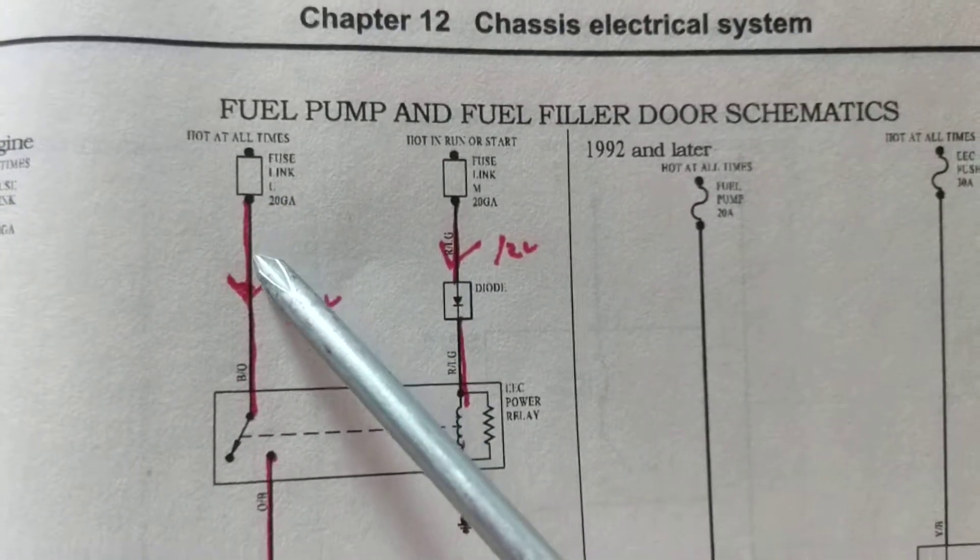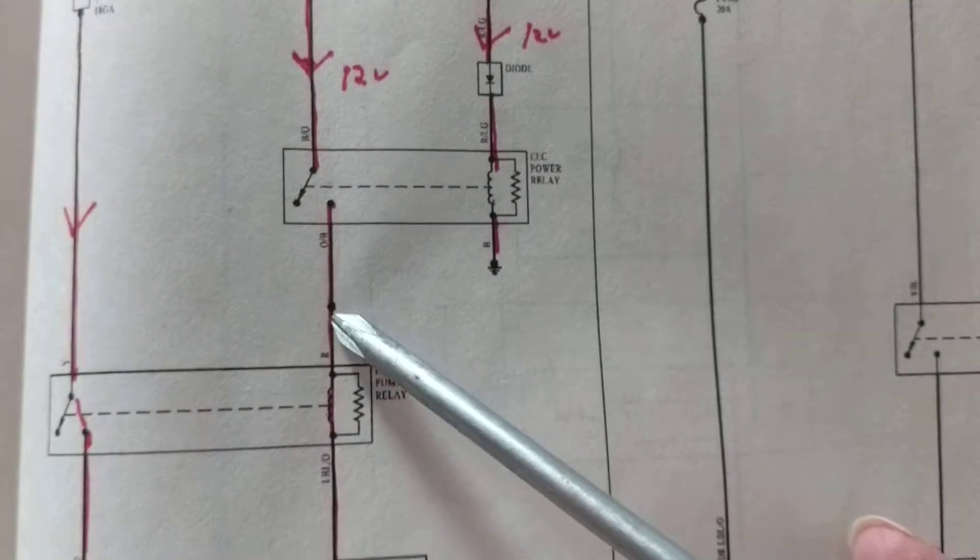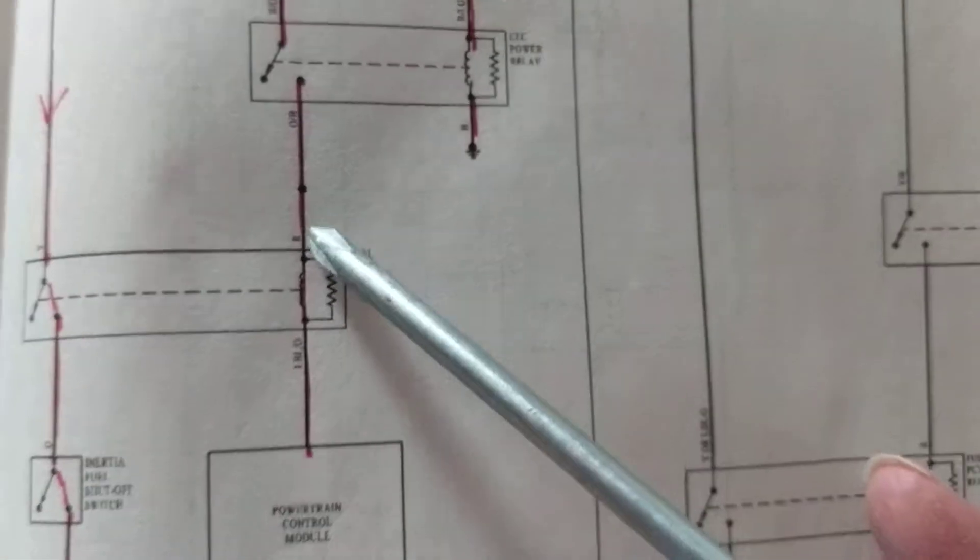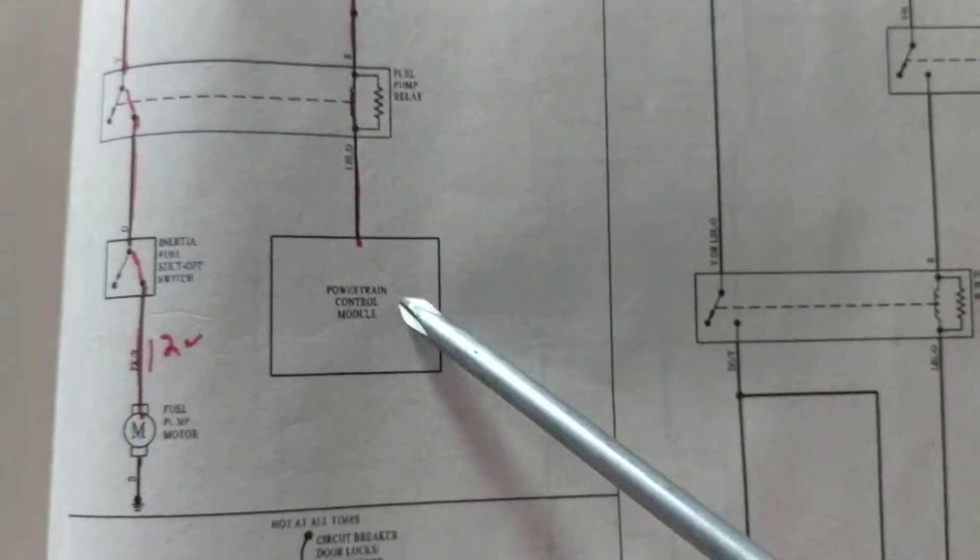So we have current going over here. Now this is a fuse link going through here, going through this fuel pump relay. Now we need a ground. As we always say, the powertrain control module provides us with the ground.